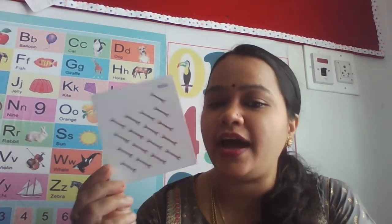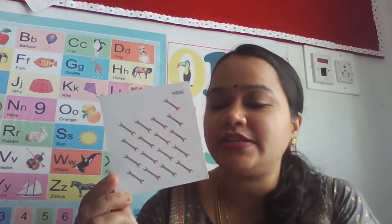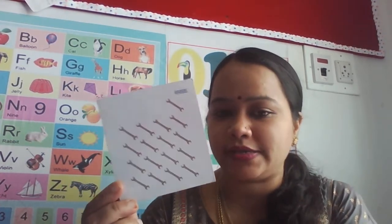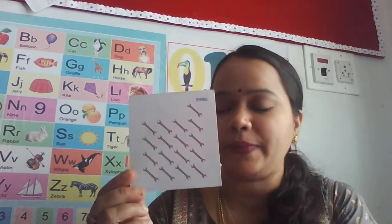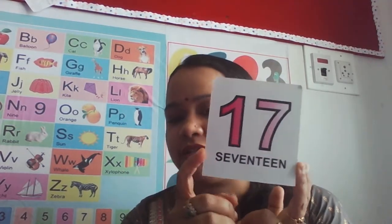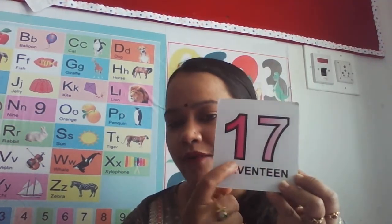How many are there? There are seventeen spanners in the picture card. And the number is? Seventeen — one, seven. Seventeen.